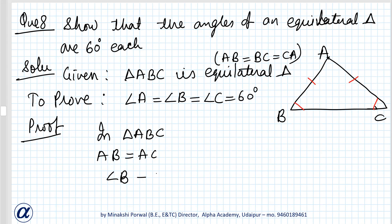So angle B will be equal to angle C. Now in triangle ABC again, AB equals BC because it's an equilateral triangle. This and this side is equal. Now if both sides are equal, then they will be equal to their opposite angles.